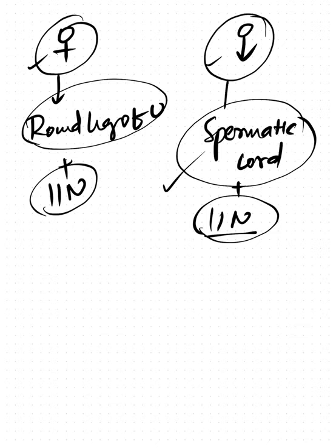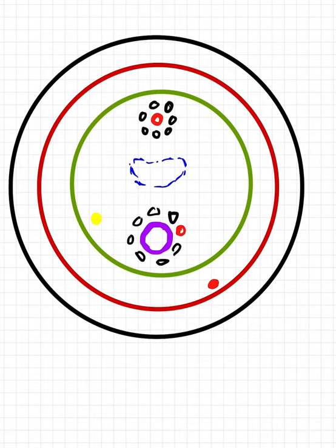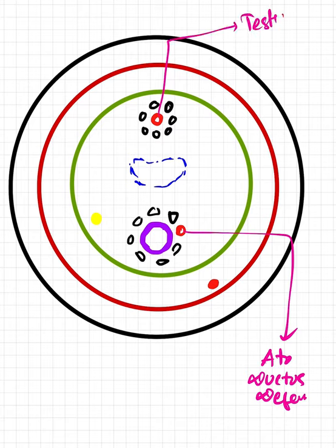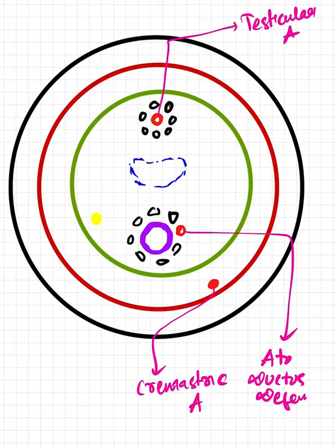The spermatic cord is the collection of structures that pass to and from the testes. The arteries within it include: the artery to the ductus deferens, the testicular artery, and the cremasteric artery — or cremasteric vessels. These three constitute the arteries of the spermatic cord.